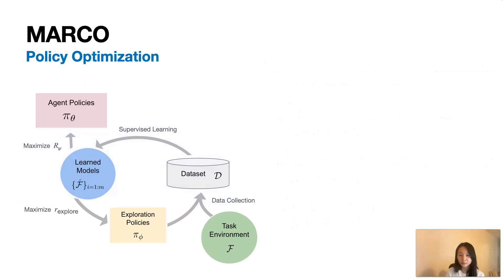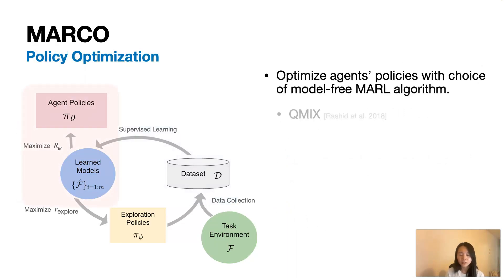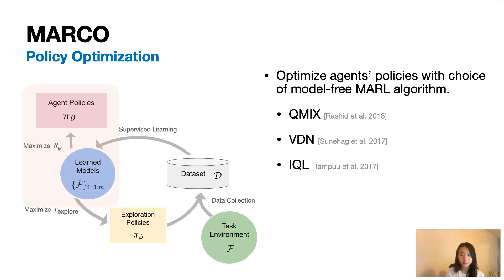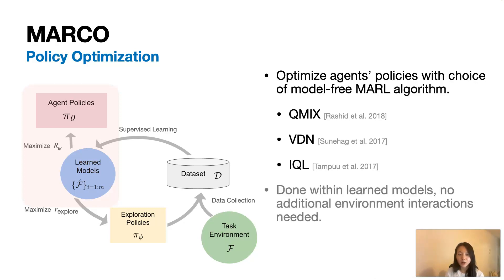With the learned models, we can then do policy optimization using a model-free MARL algorithm of choice, such as QMix, VDN, or independent Q-Learning, but not limited to those. The policy optimization step is done within the learned models, so no additional environment interactions are needed.